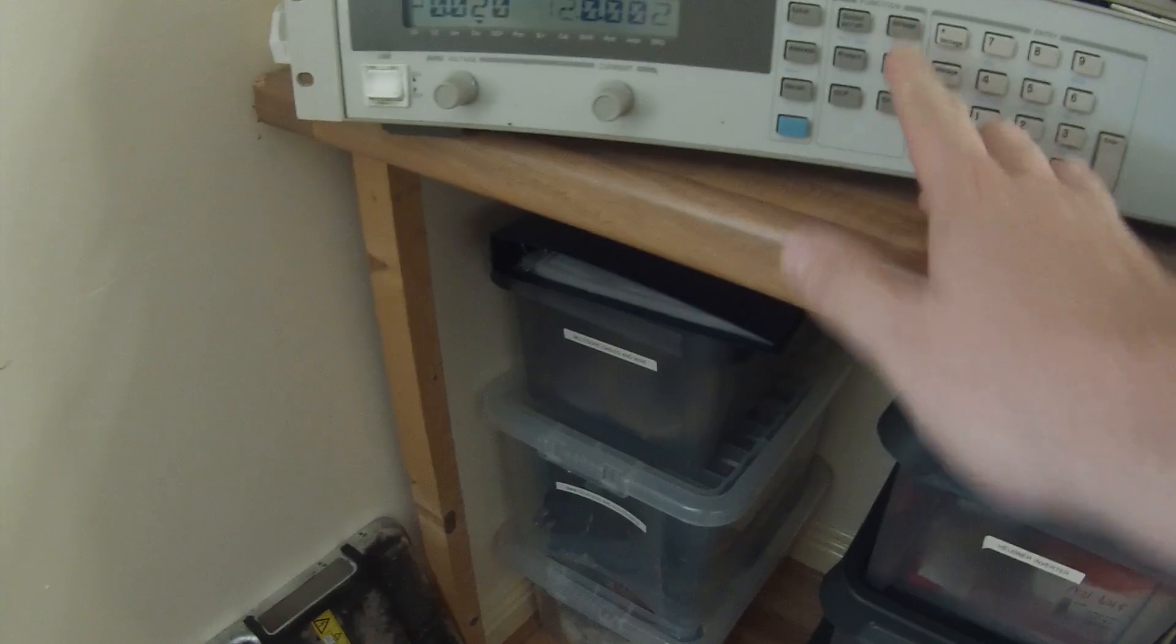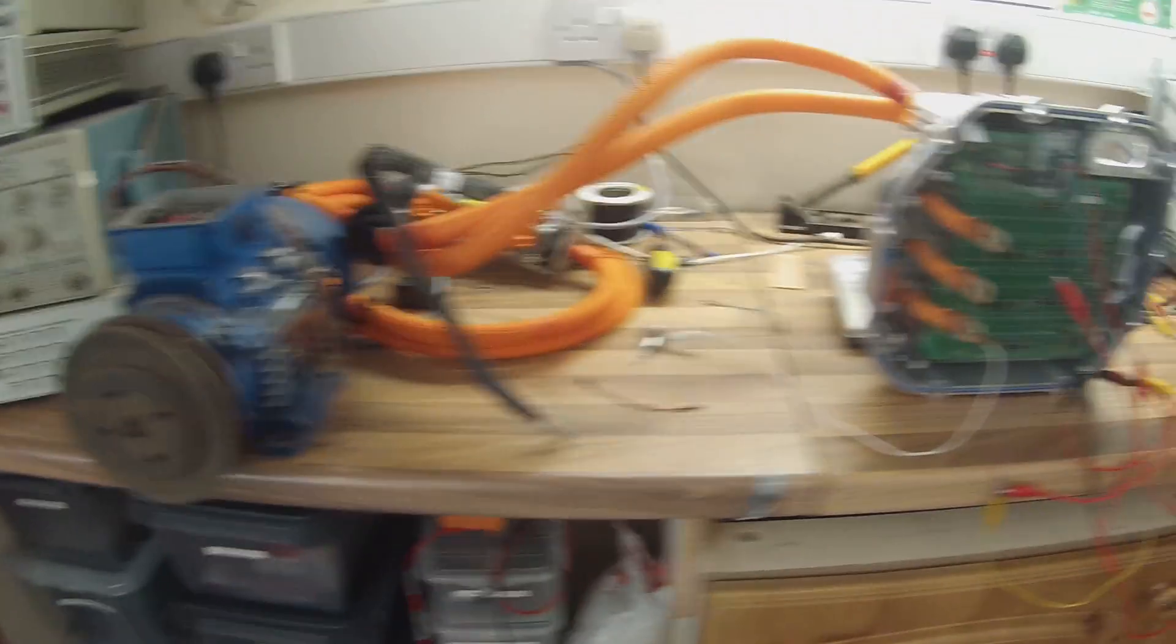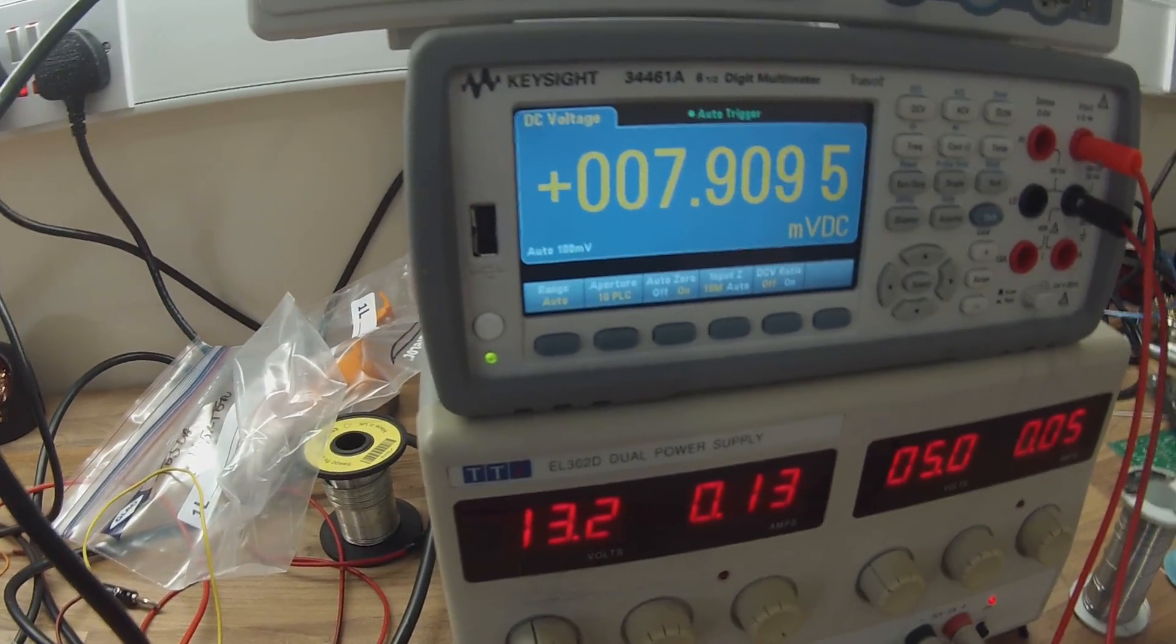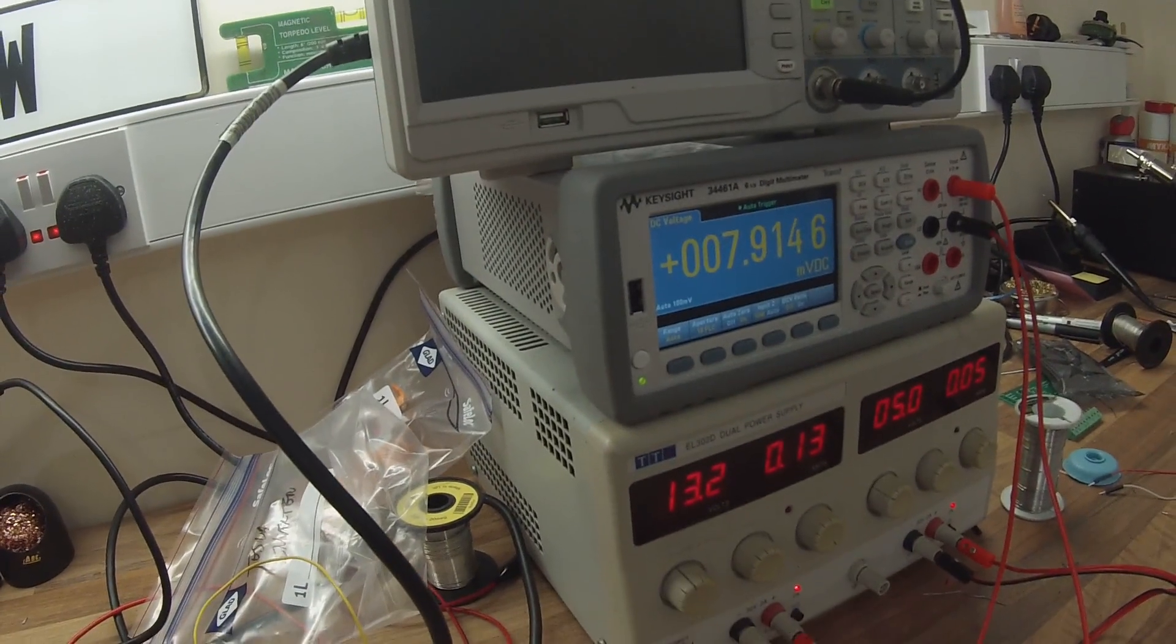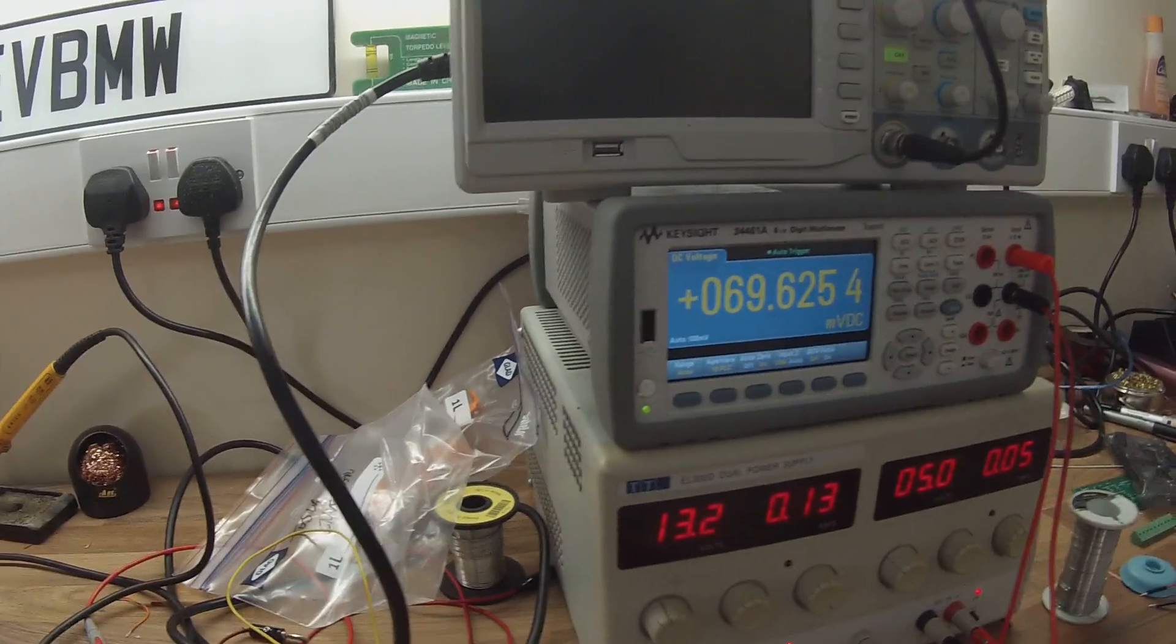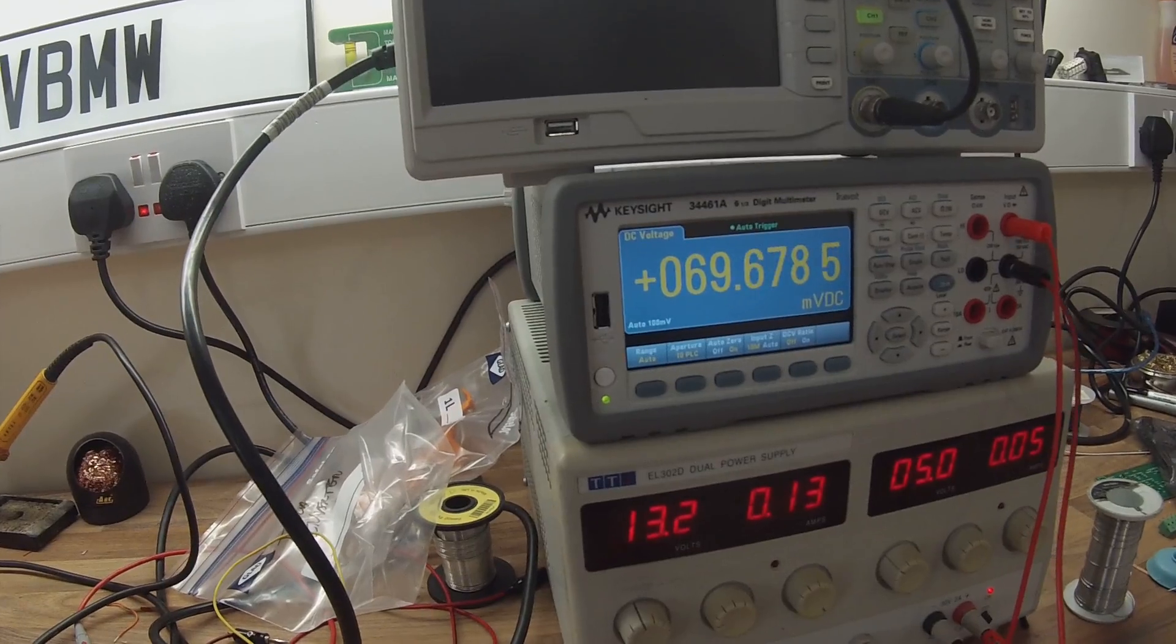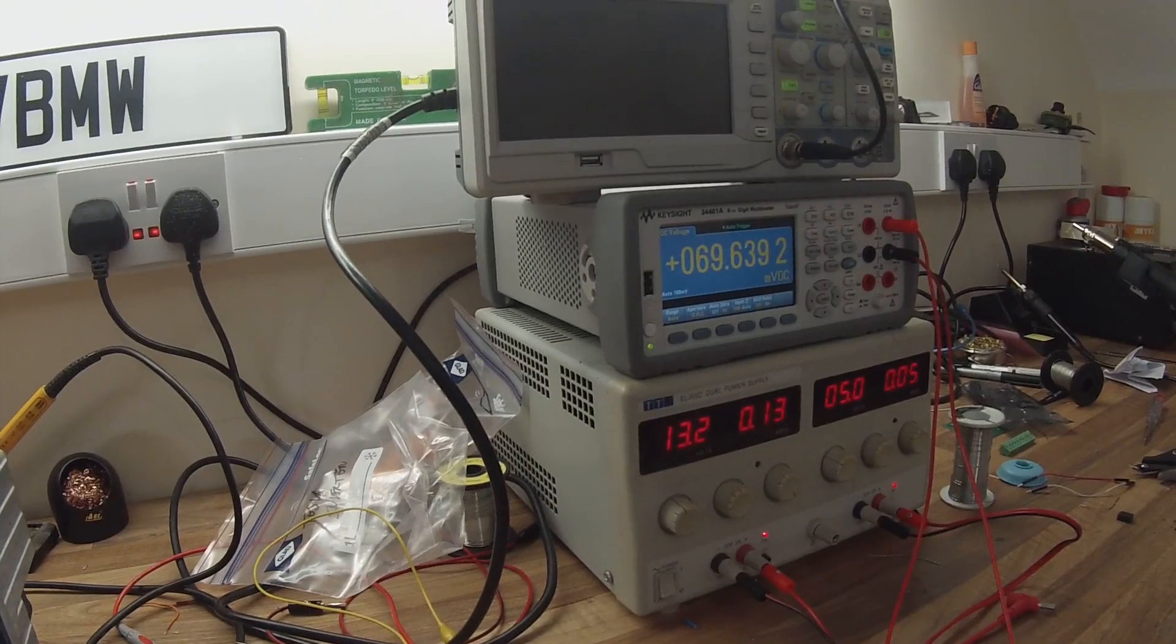I'm going to set my voltage here to 10 volts. Right now if we look at the voltage on that pin, it's at about 7.9 millivolts. If I can lean over here and hit the power supply on, you're going to see that jumps up to just under 70 millivolts. Let's say we want to change that voltage now to 20 volts.